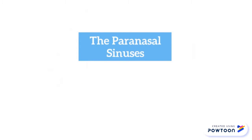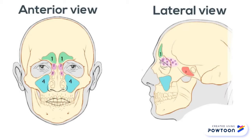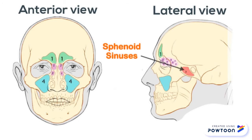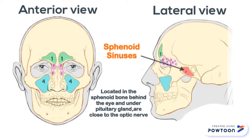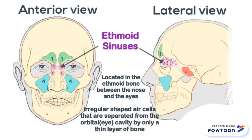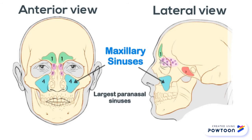Paranasal sinuses are air-filled cavities lined with mucous membrane and located in the bones of the skull. There are four pairs of sinuses located either side of the head: frontal sinuses, sphenoid sinuses, ethmoid sinuses, and maxillary sinuses.